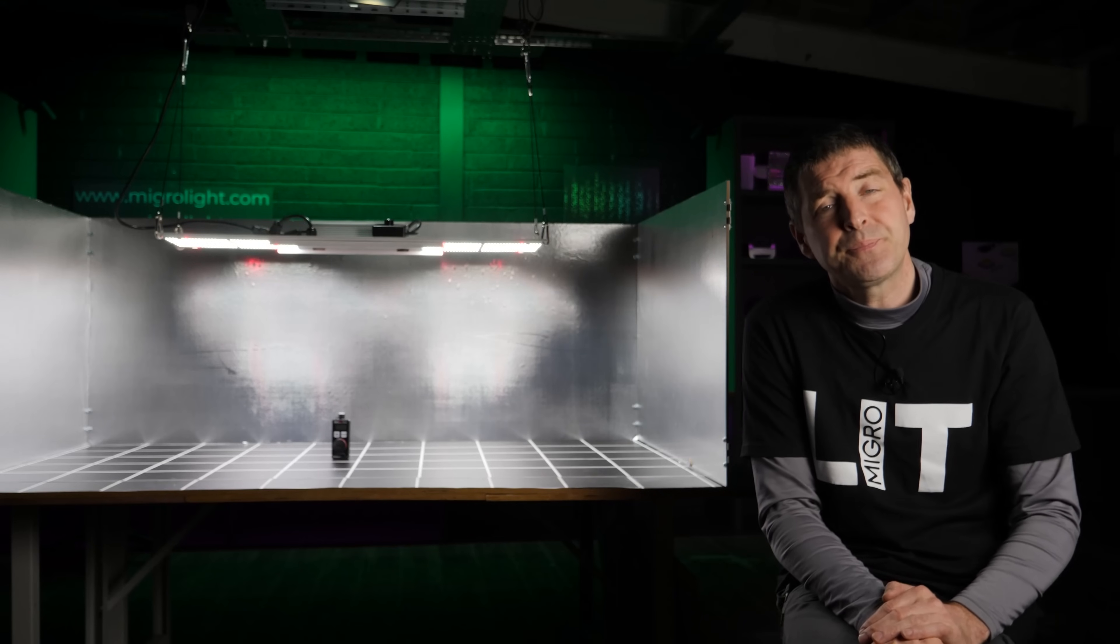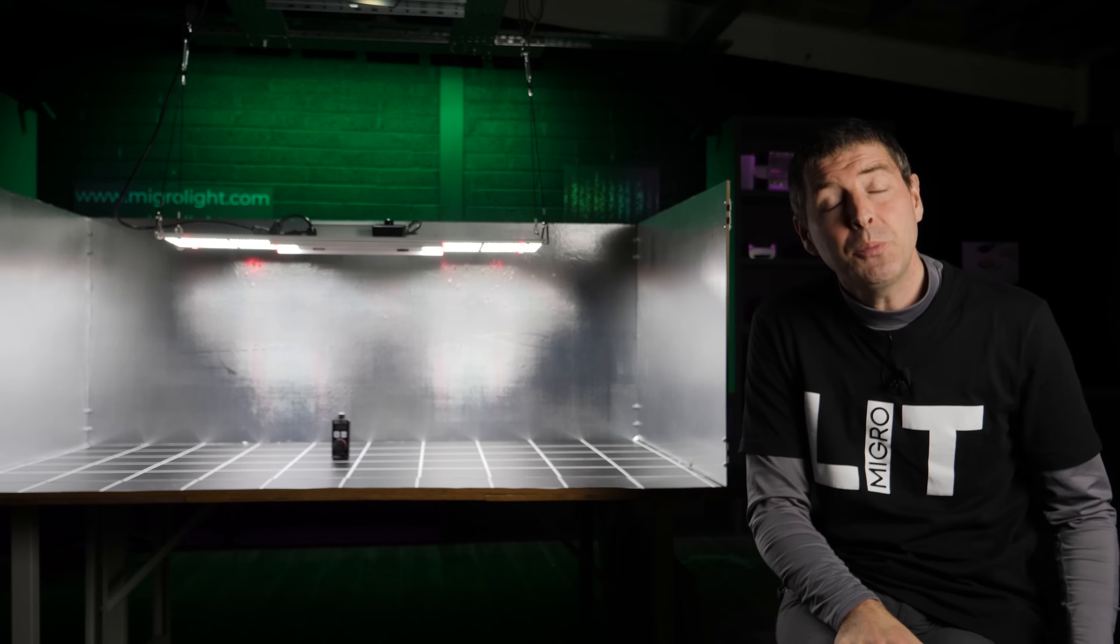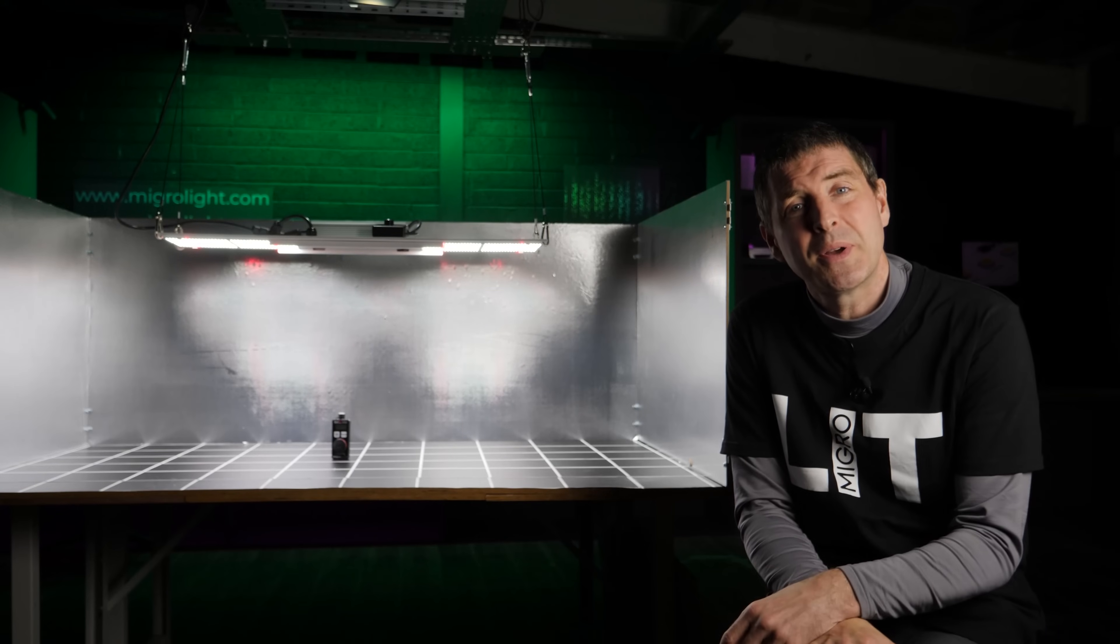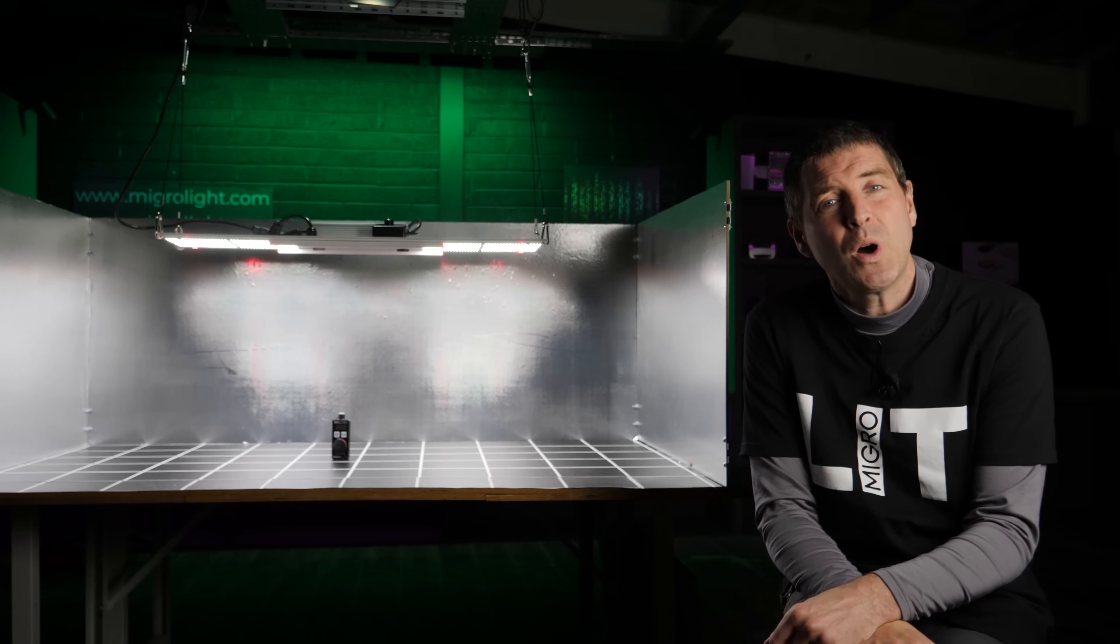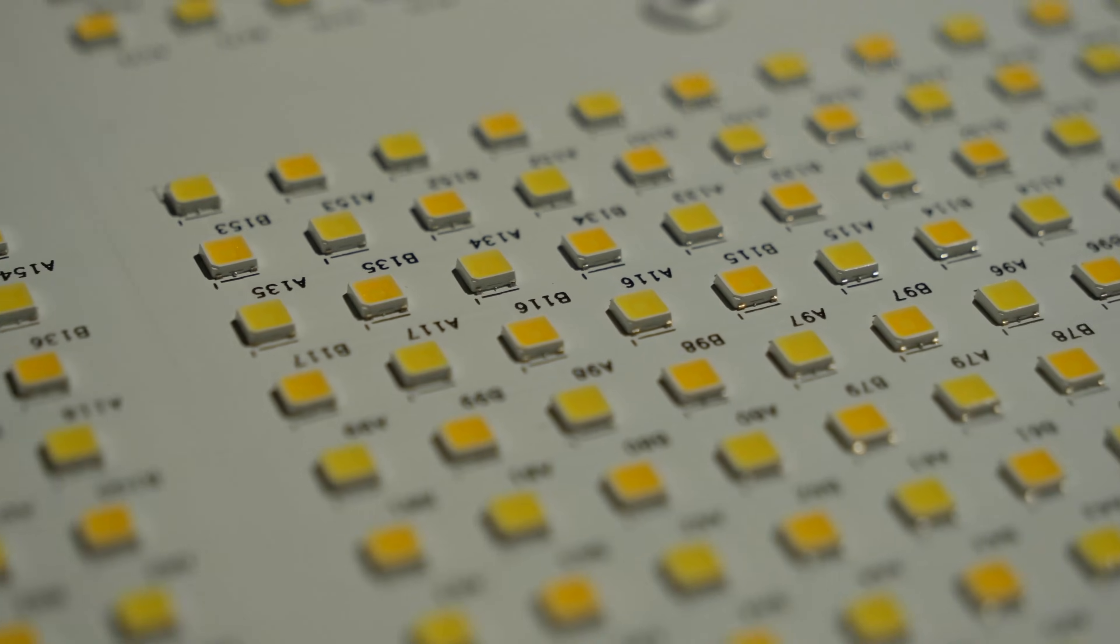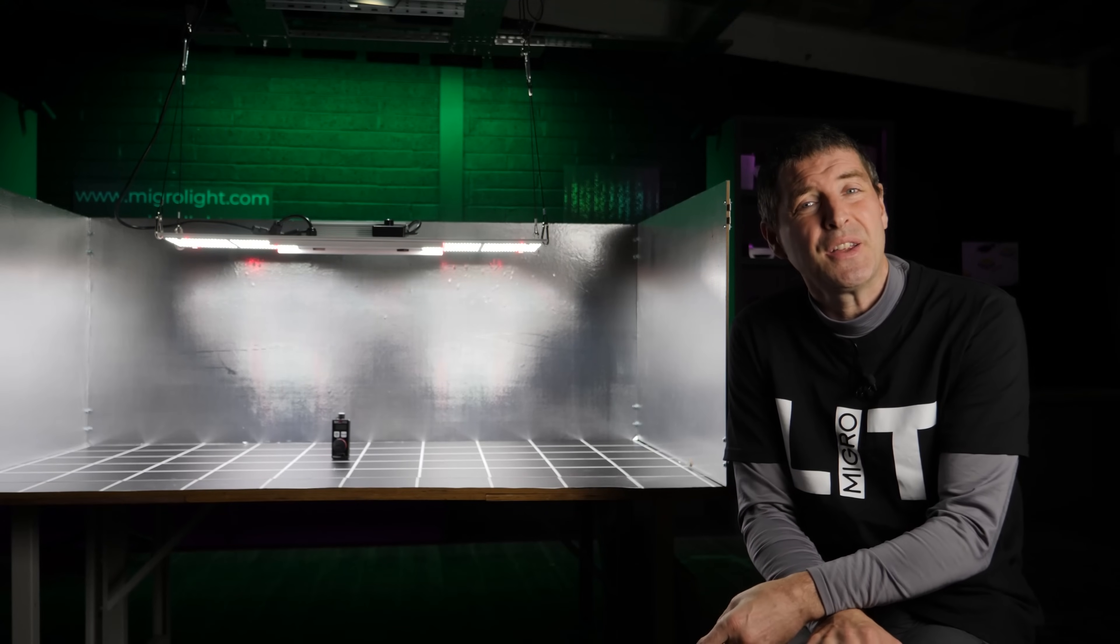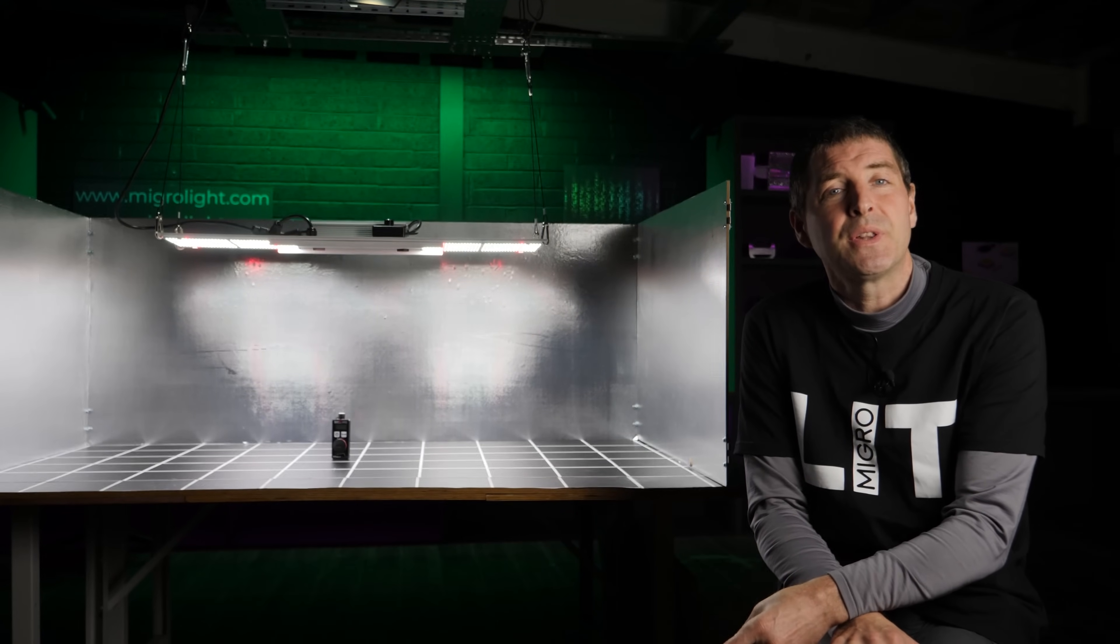HID, for example, a high efficiency double ended HPS bulb will emit a PPF of about 2.1 micromoles per watt or per joule, but in a test will only deliver about 1.4. There's about 30% losses there with HPS.